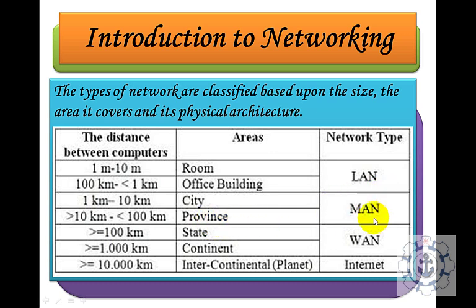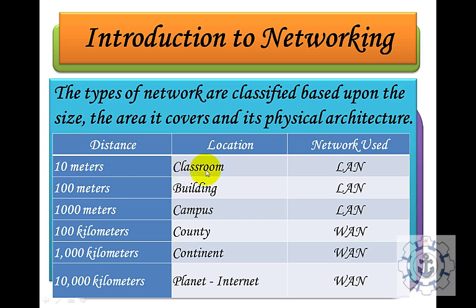For a province-sized area, we use MAN. Up to one hundred kilometers is a state, and up to one thousand kilometers is a continent — for these we use Wide Area Network. Greater than that, at ten thousand kilometers, is intercontinental — that is a planet — and we use the internet. To summarize: ten meters is a classroom LAN, one hundred meters is a building LAN, one thousand meters is a campus LAN, one hundred kilometers is a country WAN, one thousand kilometers is a continent WAN, and ten thousand kilometers is a planet using the internet.